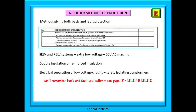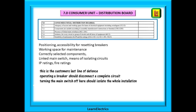Section 6 considers other methods of protecting persons and livestock — methods such as SELV or PELV systems. These are extra-low voltage (ELV), up to 50 volts AC maximum. Then there is double insulation or reinforced insulation around the copper conductors, and we may have electrical separation of low voltage circuits using safety isolating transformers. Low voltage (LV) circuits are between 50 volts and 600 volts AC with reference to earth. An example of electrical separation using a safety isolating transformer would be an electric shaver socket to the approved BS EN standards — 230 volts in and 230 volts out, but the output is separated from earth.